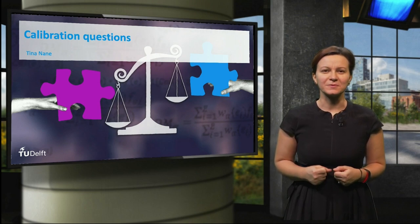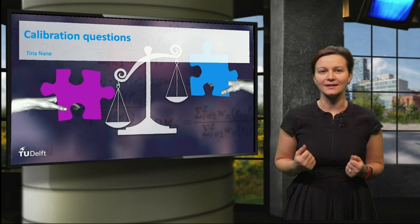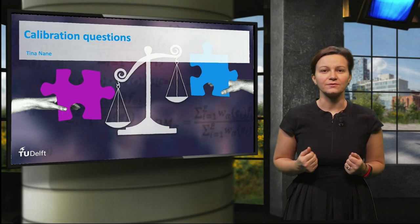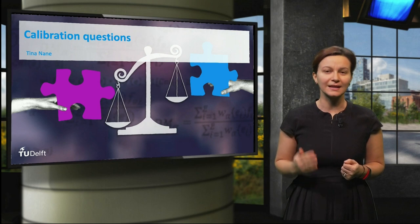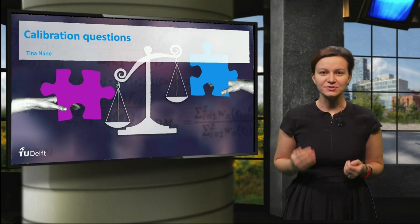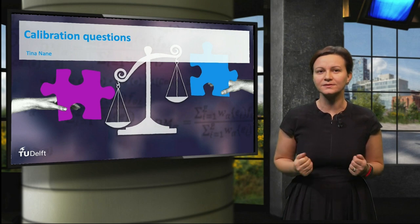The aim of structured expert judgement is uncertainty quantification when data are lacking. The ability of experts to quantify uncertainty is thus a central element of the classical model. The key idea of the classical model is the objective evaluation of expert assessments of uncertainty.